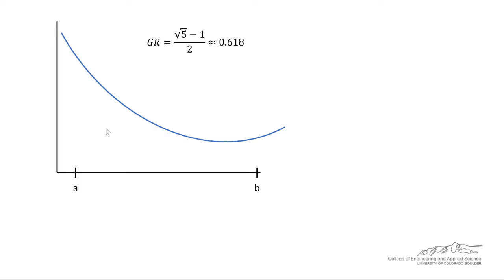Next, we calculate something known as the golden ratio, which is the square root of 5 minus 1 over 2. Next, we calculate a value d, which is the golden ratio times b minus a.